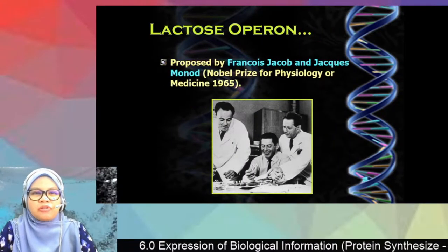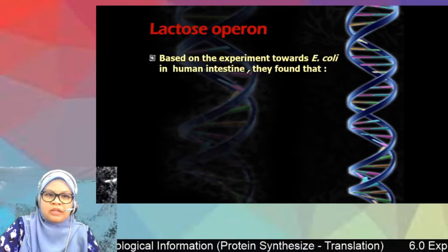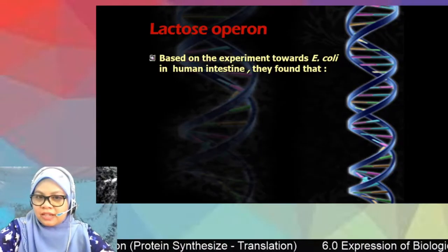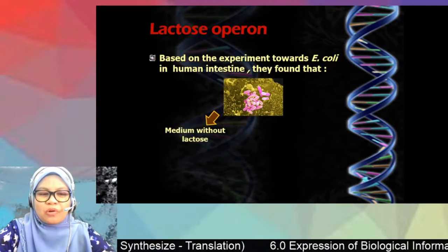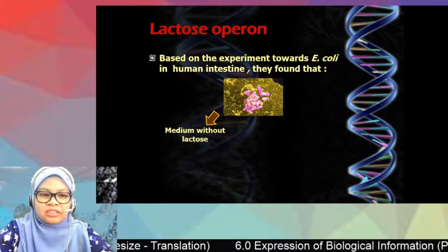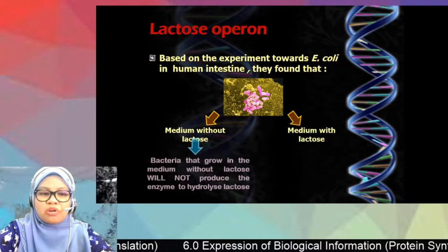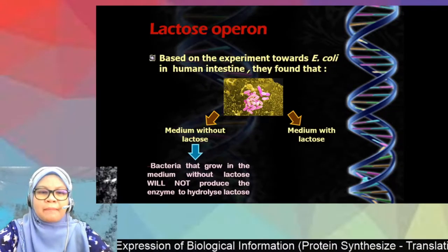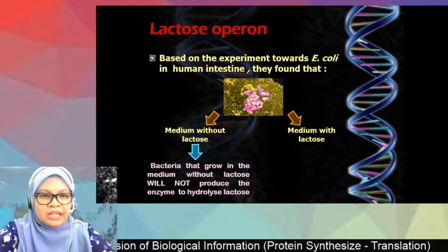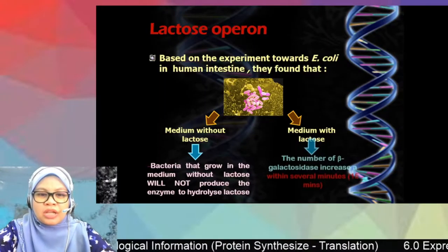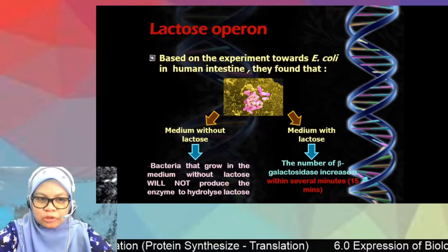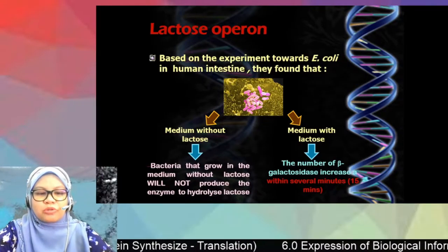The lactose operon is the finding from the experiment by Jacob and Monod. In their experiment, they used E. coli, which can be found in the human intestine. They found that when E. coli is cultured in a medium without lactose, it will not produce the enzyme to hydrolyze lactose. But if E. coli is cultured in a medium with lactose, it will produce the enzyme beta-galactosidase to hydrolyze the lactose.